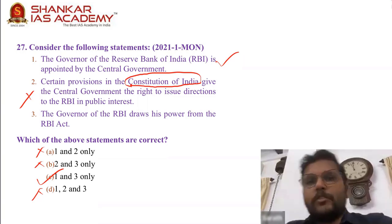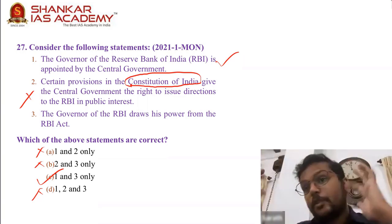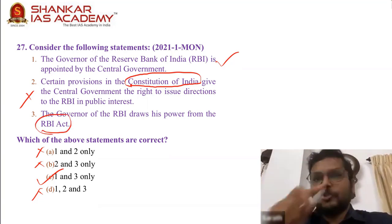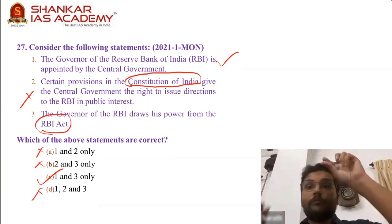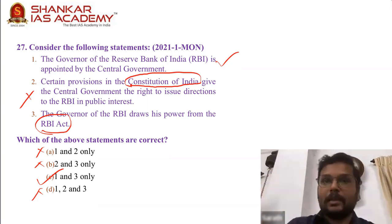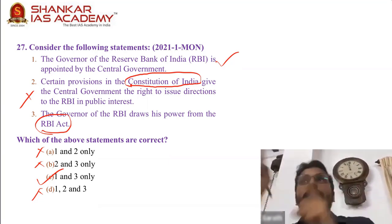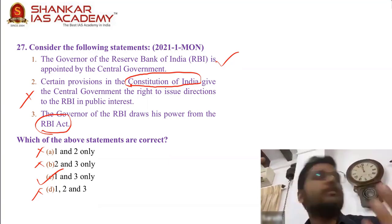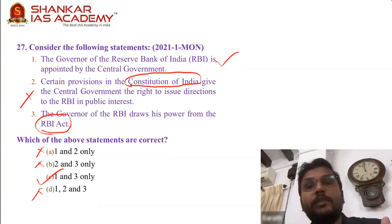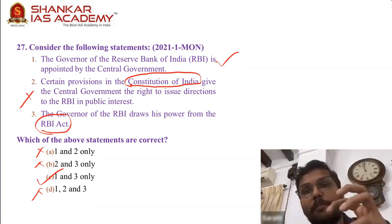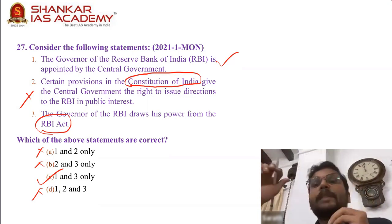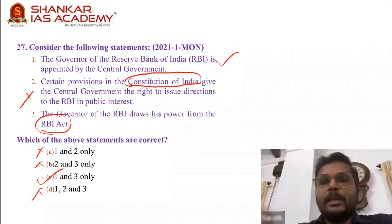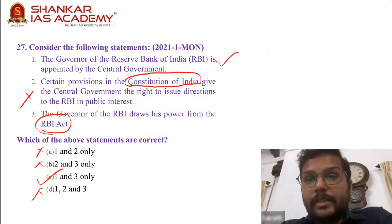Certain provisions in the RBI Act give the central government the right to issue directions to RBI in public interest. The relationship between RBI and the central government is not given by the constitution of India — it is given by the RBI Act, by an act of parliament. Many people miss this particular part. When you read the third statement saying the power is drawn from the RBI Act, that should awaken you to the error in the second statement. The answer is 27C.